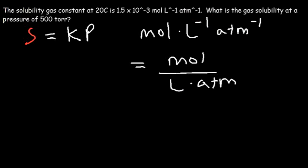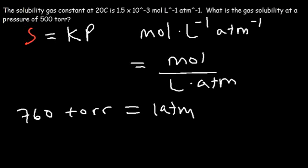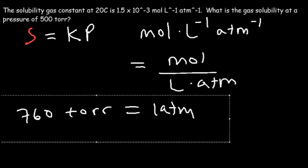Now notice that the pressure is in Torr. So we need to change it to units of atm. It turns out that 760 units of Torr is equal to 1 atm. So let's convert it to the proper units before we begin.